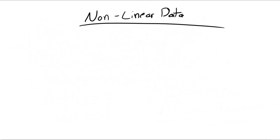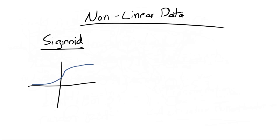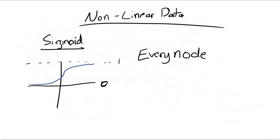So how do we account for nonlinear data, which is what we'll be dealing with most of the time? The way we get past that is by using an activation function at every node. In this case, we're going to use a very common type called a sigmoid function. A sigmoid function maps any input to something between 0 and 1, which helps us account for nonlinear data — otherwise, no matter how many hidden layers we have, it's no different than a single-layer perceptron.